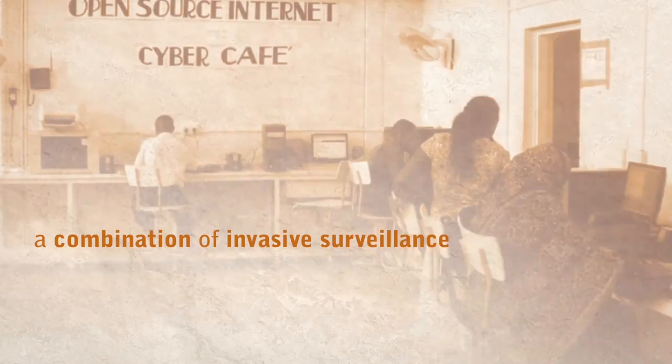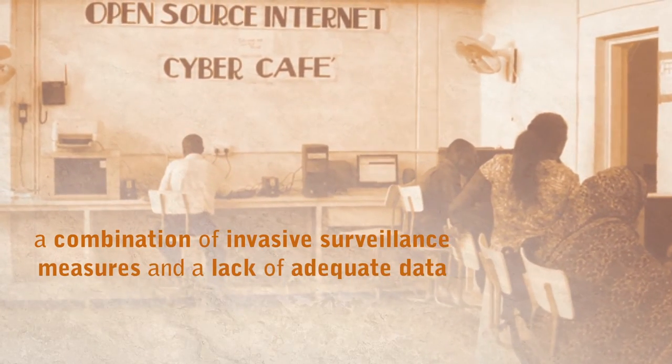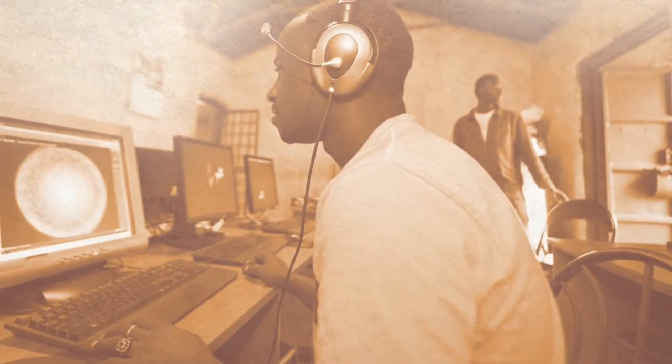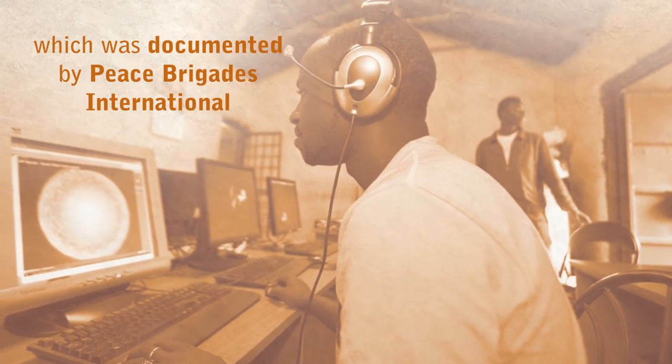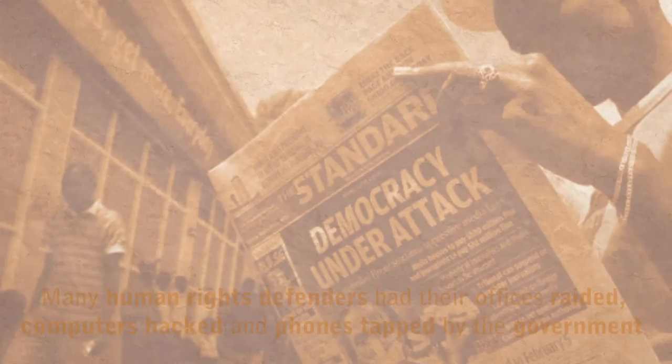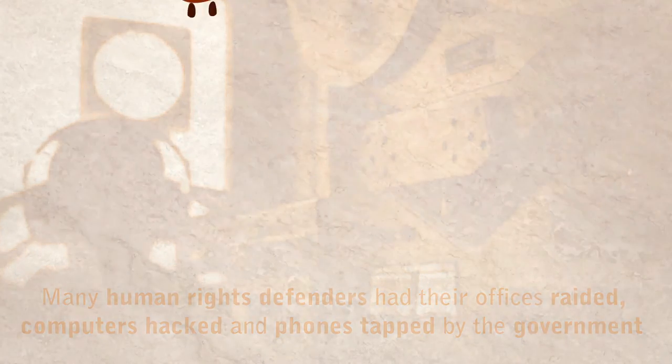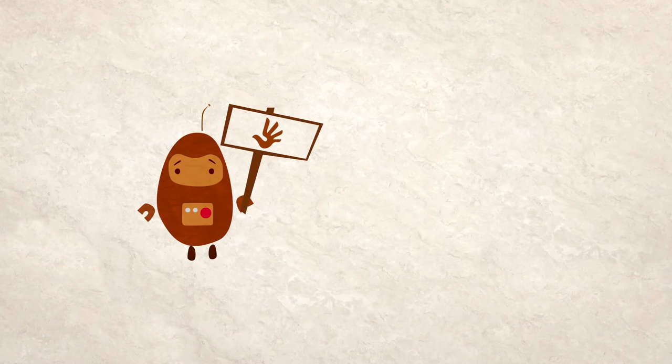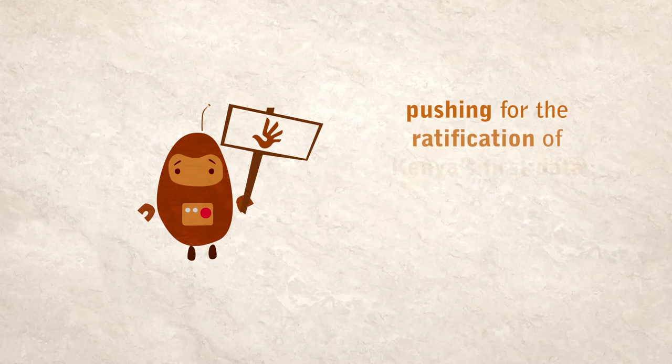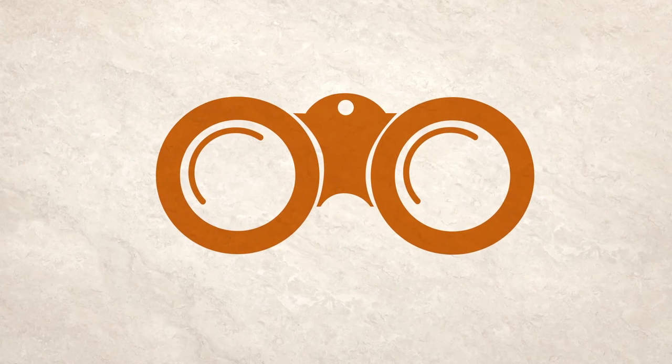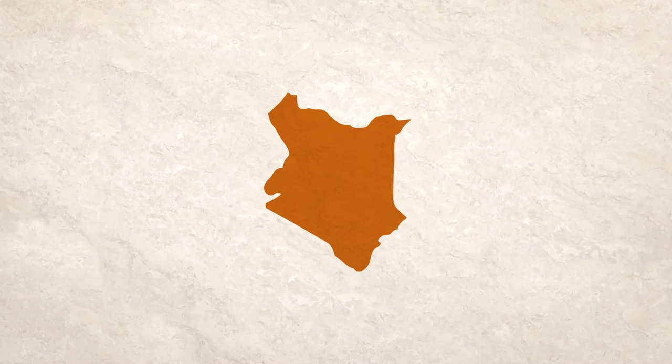Next, let's look at surveillance in Kenya. In Kenya, a combination of invasive surveillance measures and a lack of adequate data protection facilitated a crackdown on civil society in 2013, which was documented by Peace Brigades International. Many human rights defenders had their offices raided, computers hacked and phones tapped by the government. One of the ways human rights defenders have been fighting back is by pushing for the ratification of Kenya's first data protection law, long stalled in Parliament. If implemented properly, this could limit the worst excesses of state surveillance.